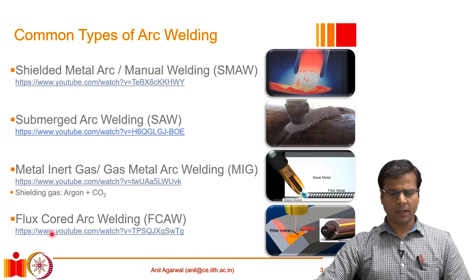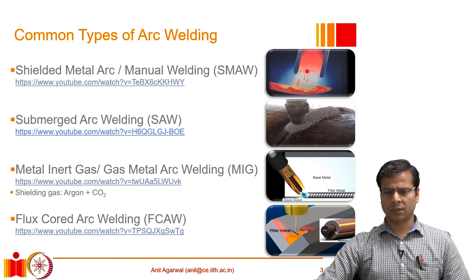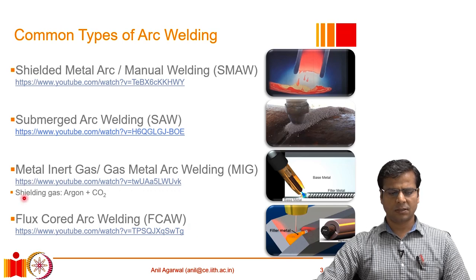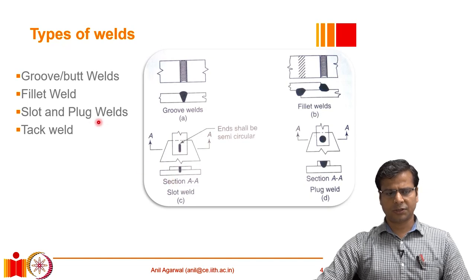One variation of MIG welding is FCAW — flux-cored arc welding. In SMAW, the electrode is on the outside and flux is the coating; in FCAW it is essentially the inverse — the flux is at the core and the filler material forms the sleeve. In addition, the nozzle may also have provisions for releasing shielding gases. So FCAW can combine a flux core with external shielding gas supply, making it basically a combination of MIG welding and SMAW.